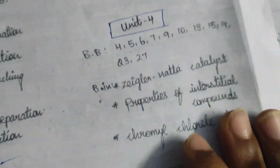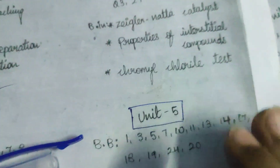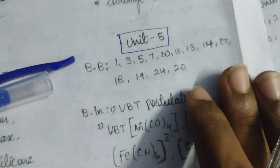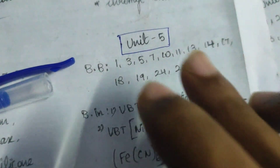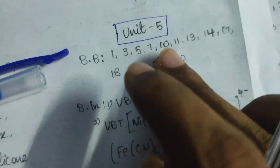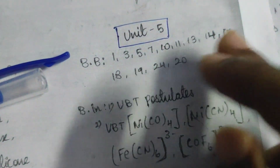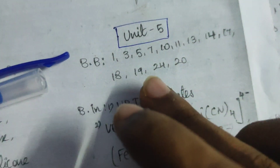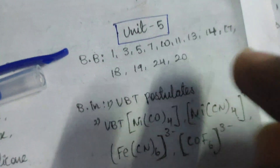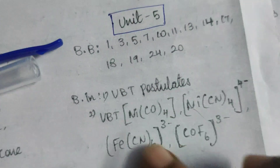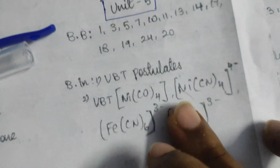Unit 4, Unit 5. Book back: 1, 3, 7, 10, 11, 13, 14, 17, 18, 19, 24, 20. Booking — check it.